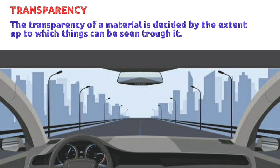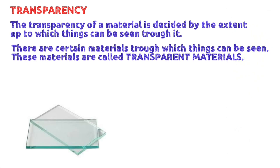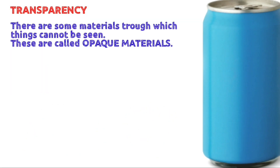The next property is transparency. The transparency of a material is decided by the extent to which things can be seen through it. There are certain materials through which things can be seen clearly — these are called transparent materials. Examples include glass, water, and some plastics.